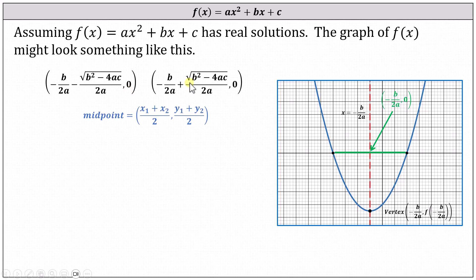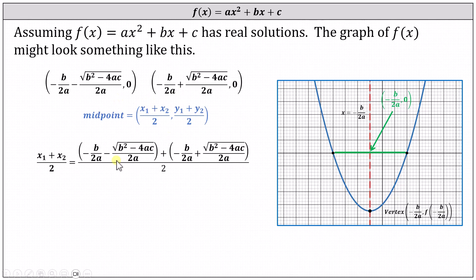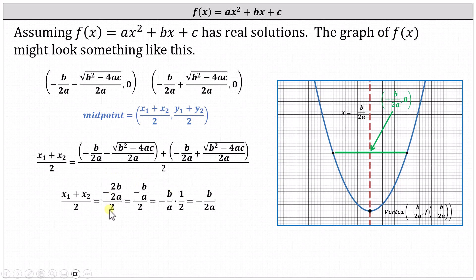Here are the two x-intercepts; the x-values are the zeros. To find the x-coordinate of the midpoint of this green segment, we add the two x-coordinates and divide by 2. Adding the numerators, notice the square root parts are opposites, so adding the numerators gives us -2b/2a, and all of this is divided by 2.